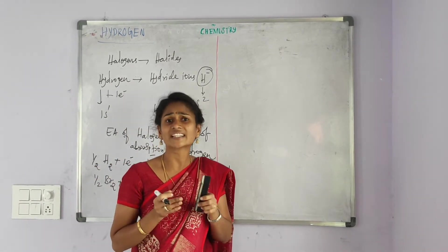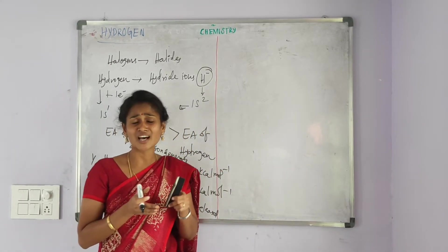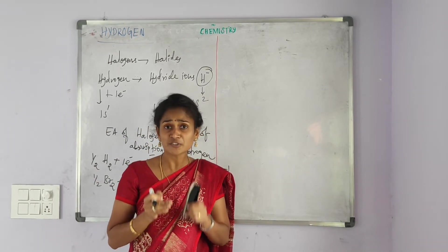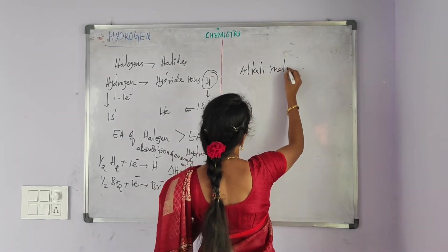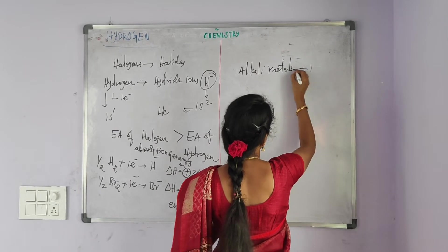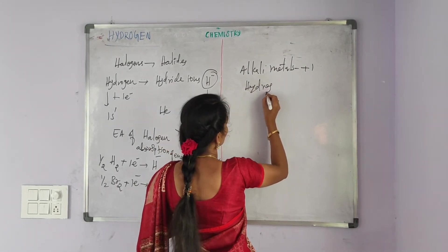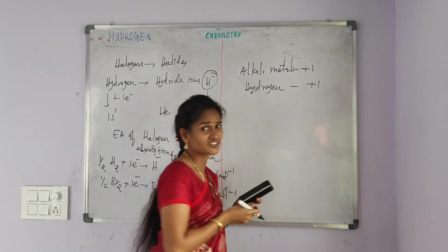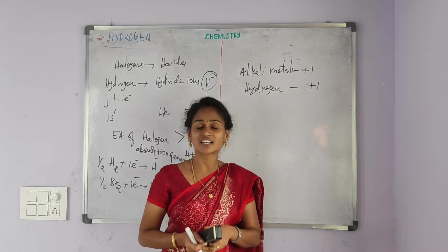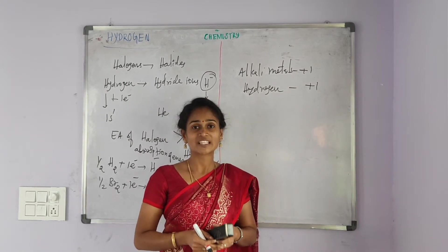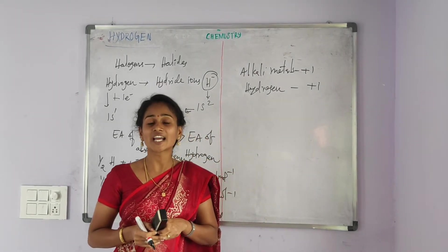Hydrogen resembles both alkali metals and halogens, so it is not easy to provide it a proper position in the periodic table. Alkali metals always show the +1 oxidation state. In most hydrogen compounds, hydrogen is also present in the +1 oxidation state. That is why hydrogen is kept in Group 1 along with the alkali metals in the latest modern periodic table published by the IUPAC.